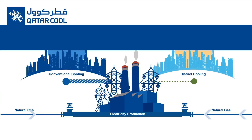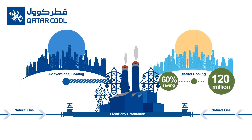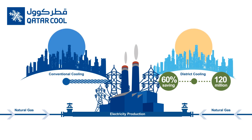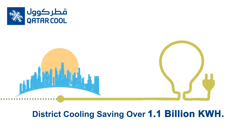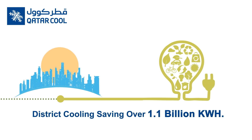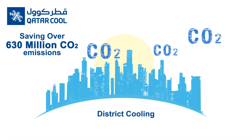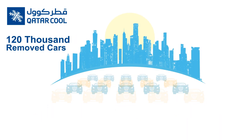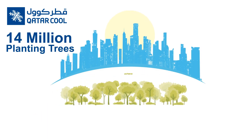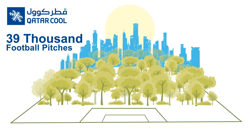Reducing the demand for natural gas for power generation, this is the equivalent to saving 120 million Qatari Rial over the last six years. The energy savings over the past six years is equivalent to 1.1 billion kilowatt hours, which is equivalent to saving over 630 million kilos of CO2 emissions. The CO2 emissions saved is equivalent to removing 120,000 cars off the roads, or planting 14 million mature trees, which would fill over 39,000 football pitches.